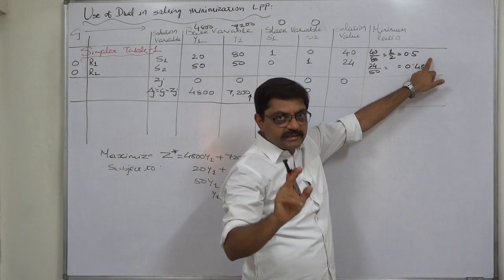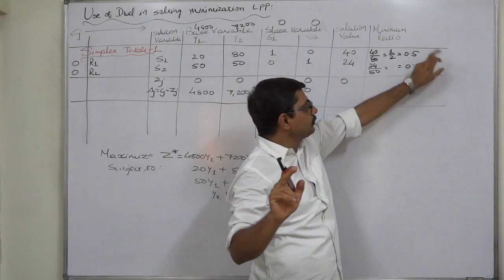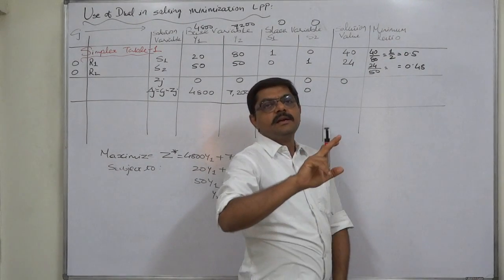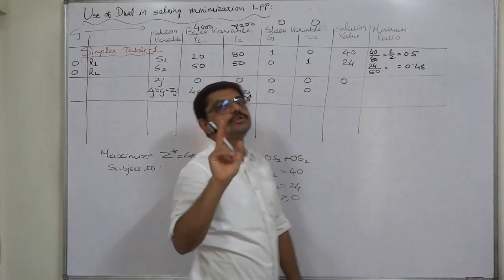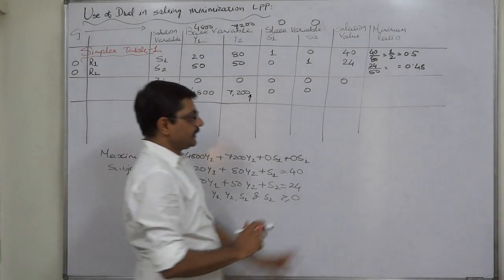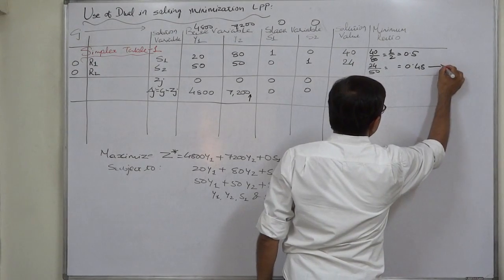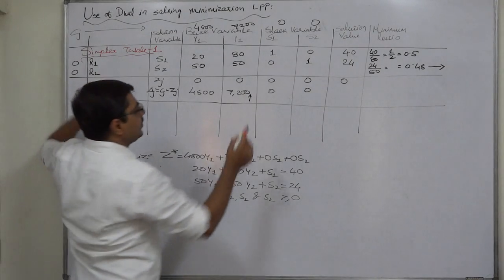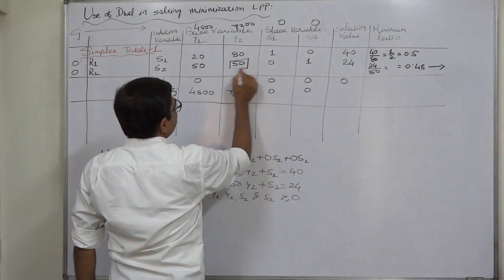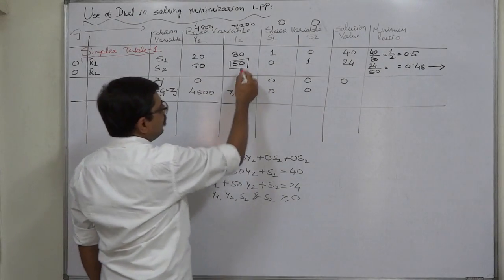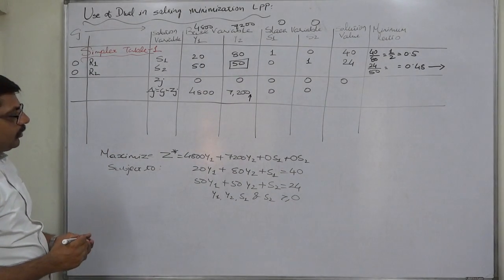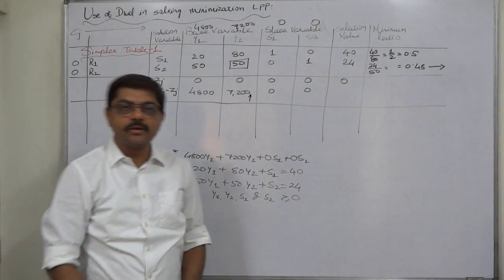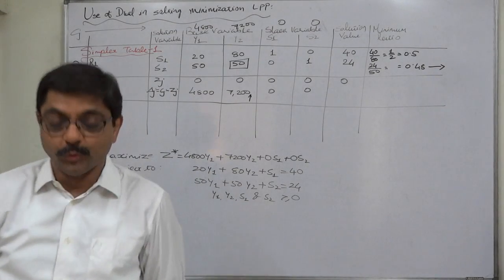Never write decimal values in the simplex table — always use fractions only. The decimal values are written here only for comparison purposes. Since 0.48 is the minimum ratio, r2 becomes the outgoing row, or key row. The element 50, being the common element of the key column and key row, becomes the key element. We will prepare the second simplex table in the next lecture.